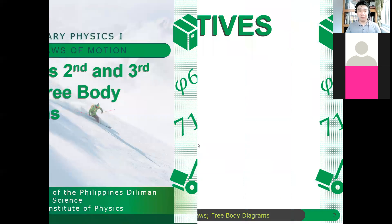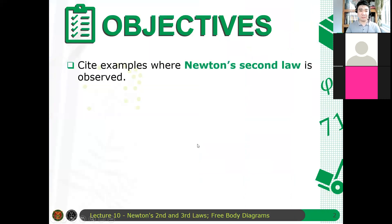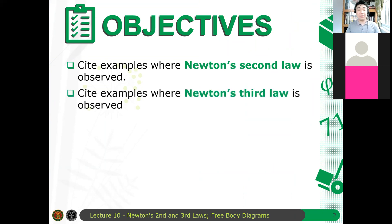So again, here's an outline. Here are the objectives of this discussion. First, cite examples where Newton's second law is observed. Of course, kung may net acceleration yan, you will see that Newton's second law is also observed in those cases. Of course, kailangan inertial reference frame pa rin yan. And then we also cite examples where Newton's third law is observed. Here we have action and reaction pairs. So if there's an action force, there should be an equal and opposite reaction force.